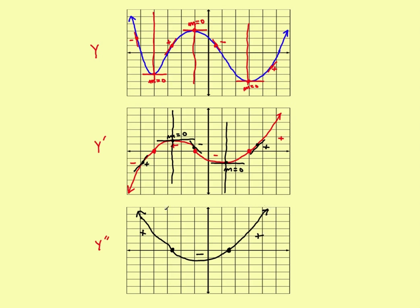That black graph represents the second derivative of the original function. It's actually a pretty easy two-step process: quickly sketch the first derivative, then make a second sketch of its derivative, and you'll have the second derivative of the original function.